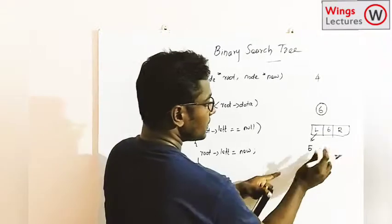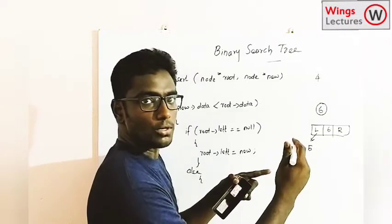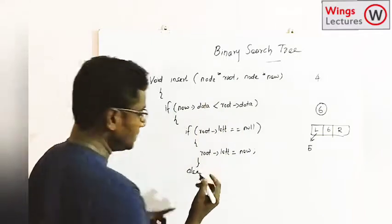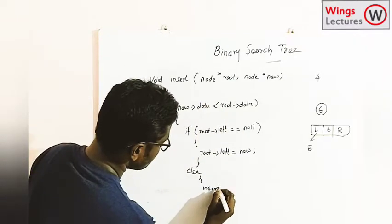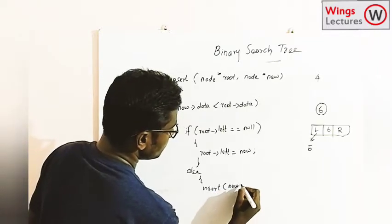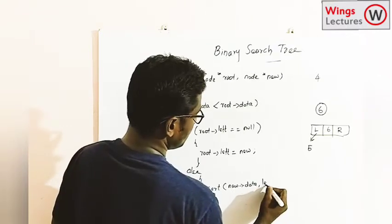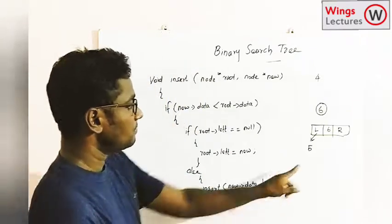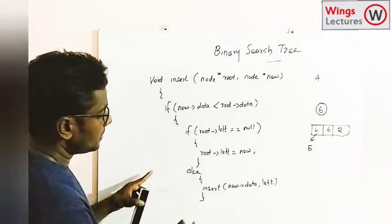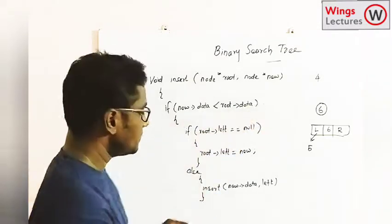For example, if I'm having 5 as an existing node, 5 will become a root in the recursive call and I have to start the comparison again. The recursive call is: insert(new data, root left) — passing the left node as the new root. So for the less-than case, this is how the recursive insertion works.